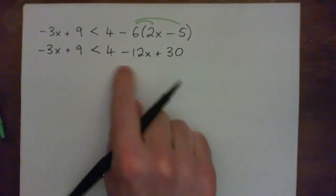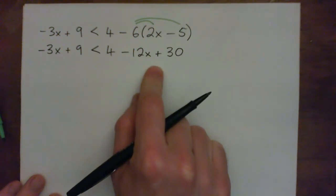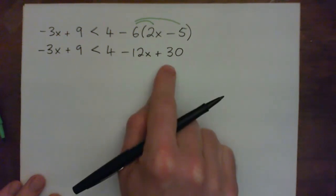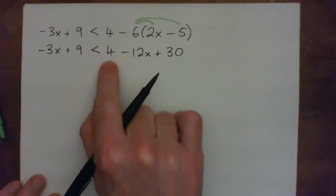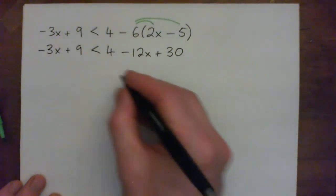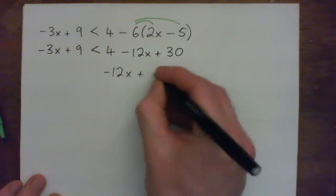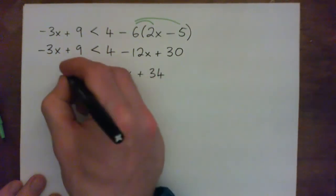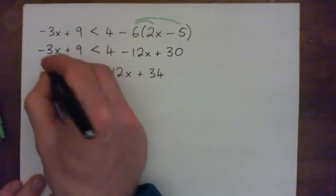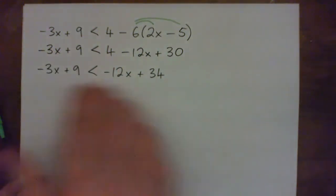So there's one other thing to do on the right. You can add two like terms together. What are the two like terms? Positive 4 and the 30 to make 34. So on the right we'll have negative 12x plus 34. And now we have simplified the right of the equation. Both sides are simplified.